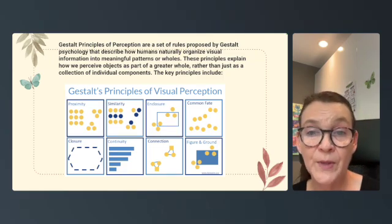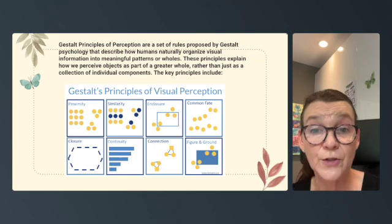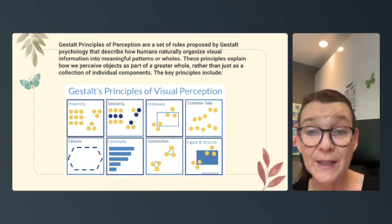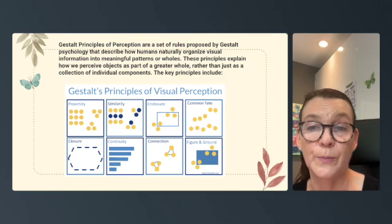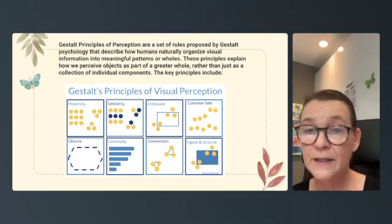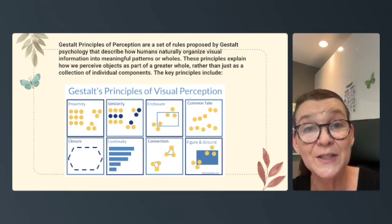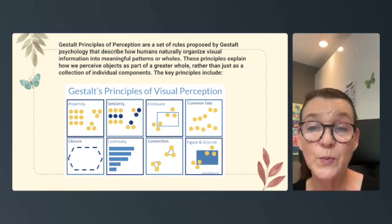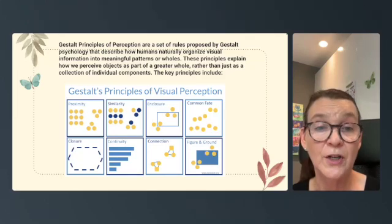Continuing with the Gestalt principles: proximity — objects close to each other are perceived as a group; similarity — objects that are similar are perceived as part of the same group; continuity — the mind follows continuous lines and patterns; and common fate — objects moving in the same direction are perceived as a group.